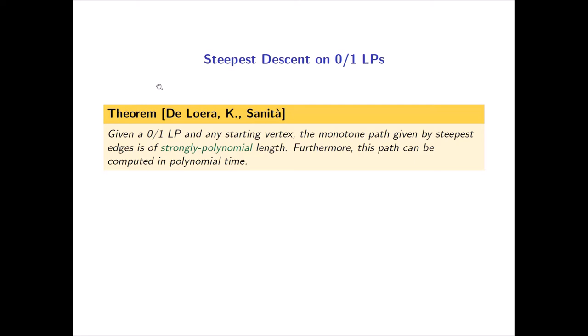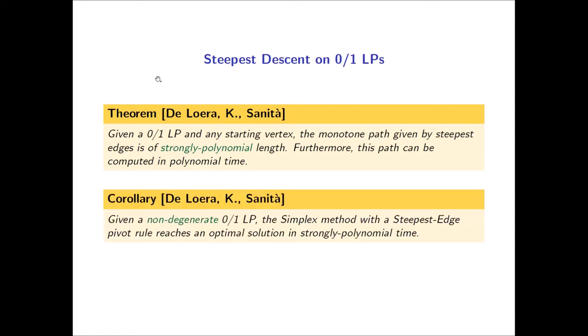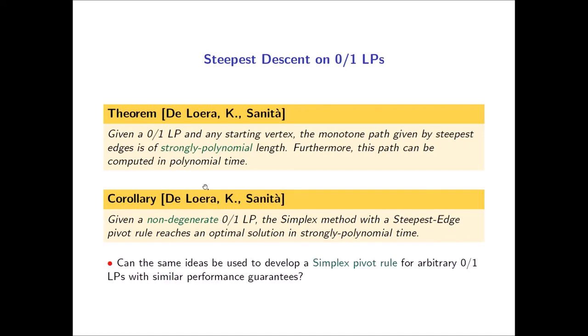Achieving this result really did come from approaching this topic from the perspective of circuits — understanding the circuit augmentation algorithms and circuit machinery led us here. Speaking of the simplex method, we get a corollary: if given a non-degenerate zero-one LP, the simplex method with the steepest edge pivot rule reaches an optimal solution in strongly polynomial time. In the non-degenerate setting, the pivot directions are precisely the edge directions, so it follows the same path. However, the set of non-degenerate zero-one LPs is quite restrictive, so a natural question is whether we can do this in the presence of degeneracy.